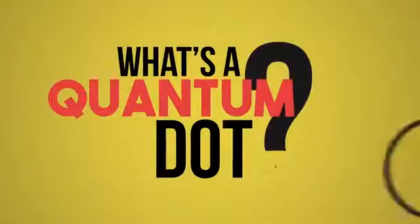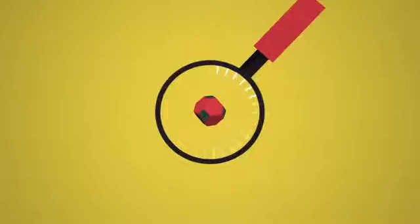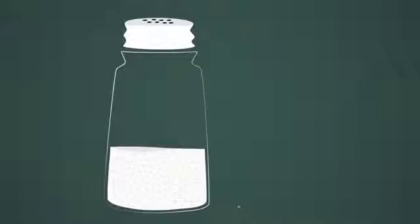What's a quantum dot? Quantum dots are nano-sized, semi-conducting crystals made of only 100 to 100,000 atoms. In comparison, one grain of salt has about 12 trillion times more atoms.